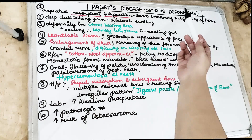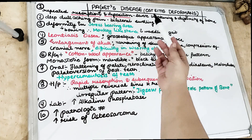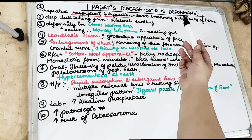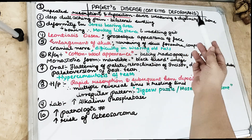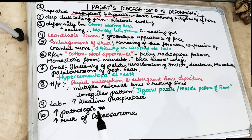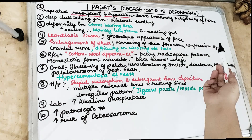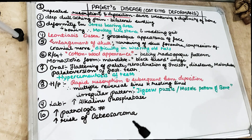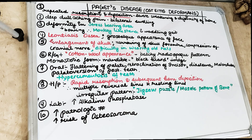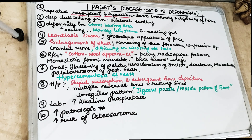As the name suggests, osteitis deformans means deformity of the bone — osteitis referring to the bone, and deformans meaning deformity and weakening of the bone. Paget's disease was first reported by Sir James Paget in 1877.